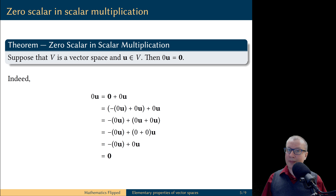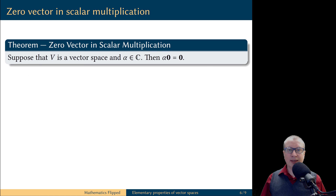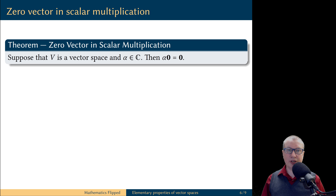Would anyone dare to say that mathematics is boring? Look at the creativity in this proof. Now let's switch the roles: the vector will be the zero vector and the scalar will be an arbitrary scalar. We are going to prove that a scalar multiple of the zero vector is always the zero vector, regardless of what the scalar is.